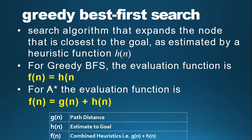In the greedy best-first search, the evaluation function F(n) is equal to the heuristic H(n). However, in the A* search strategy, F(n) is equal to G(n) plus H(n), where G(n) is the path distance from the start to the current node, and H(n) is the heuristic estimate of the cost from the current node to the goal. So F(n) combines both G(n) and H(n) in A*, while in greedy best-first search it is only H(n).